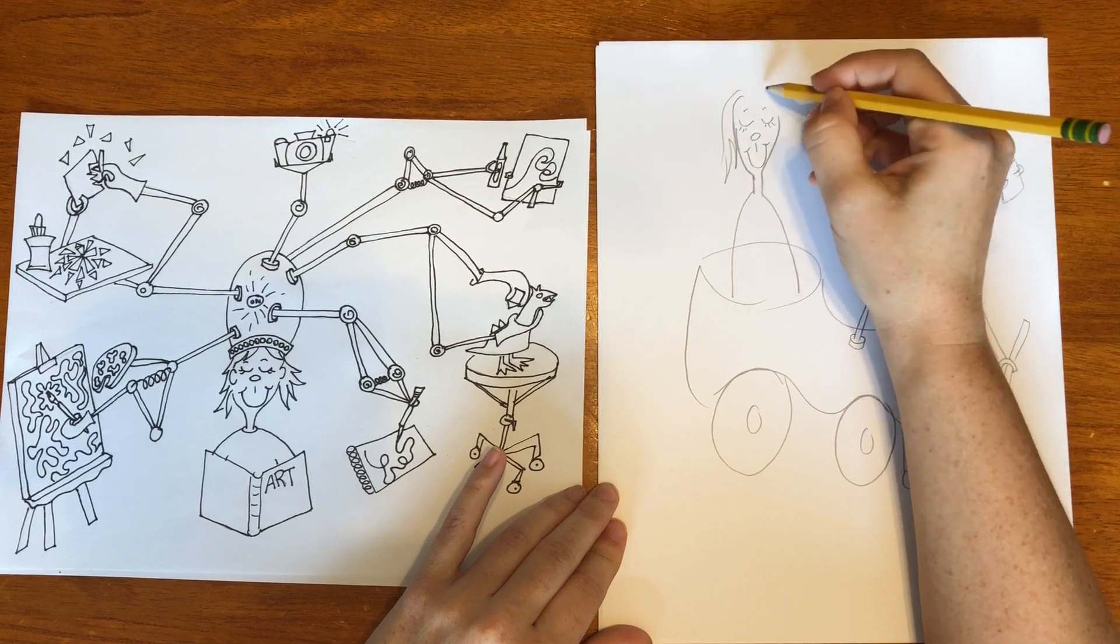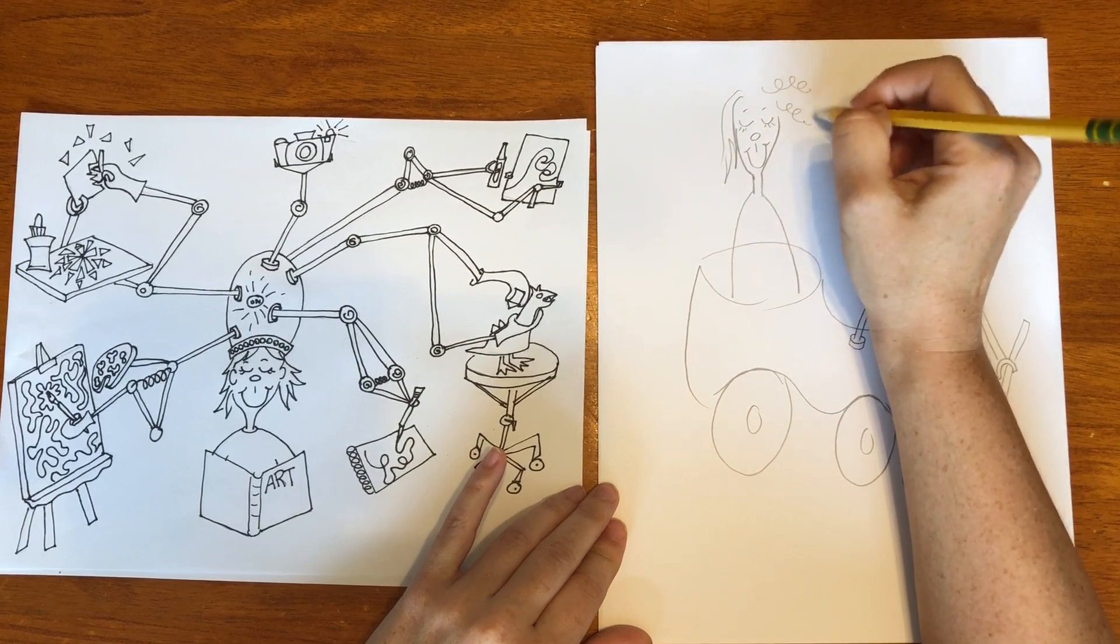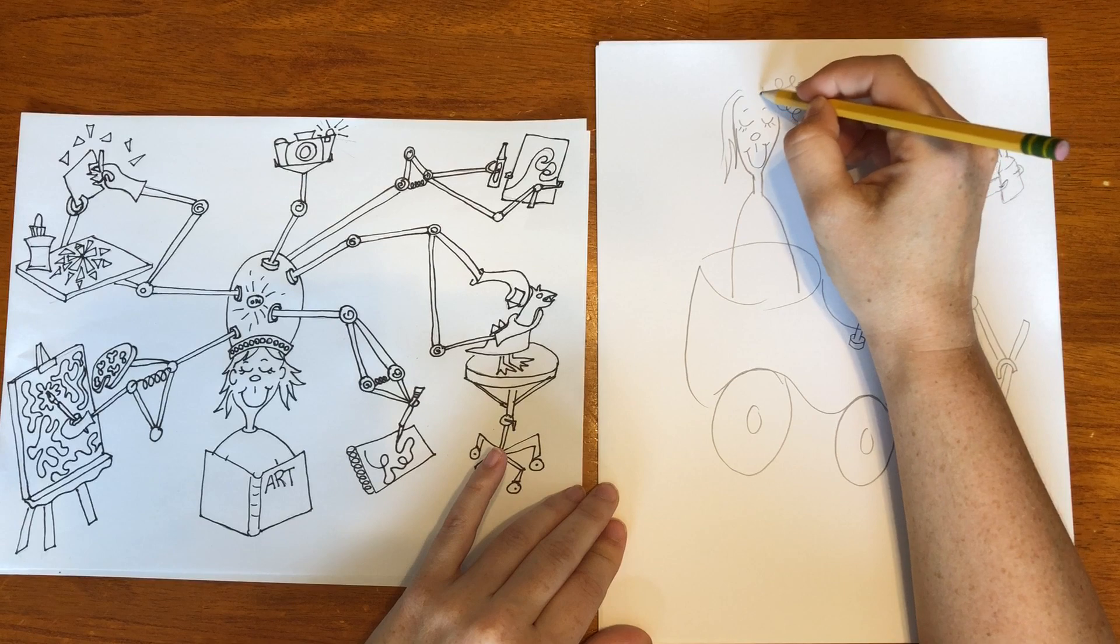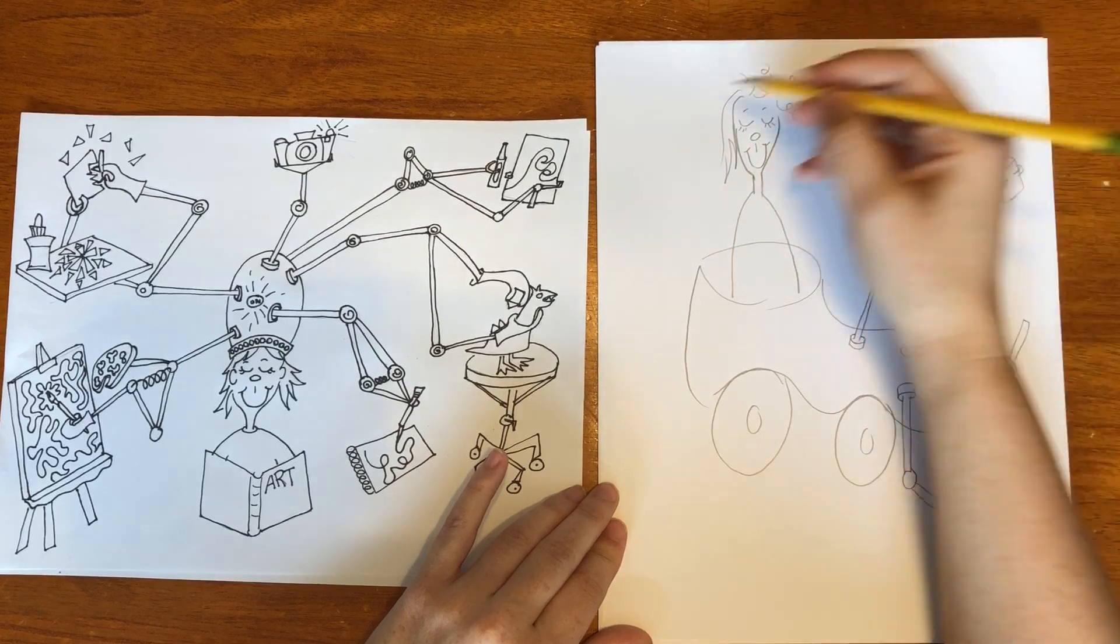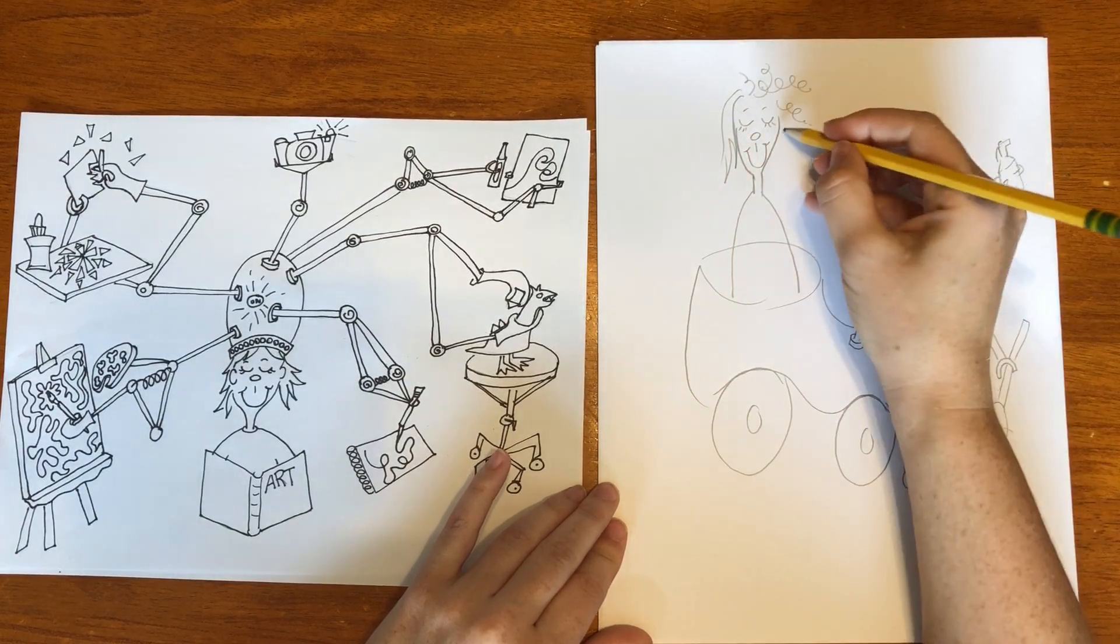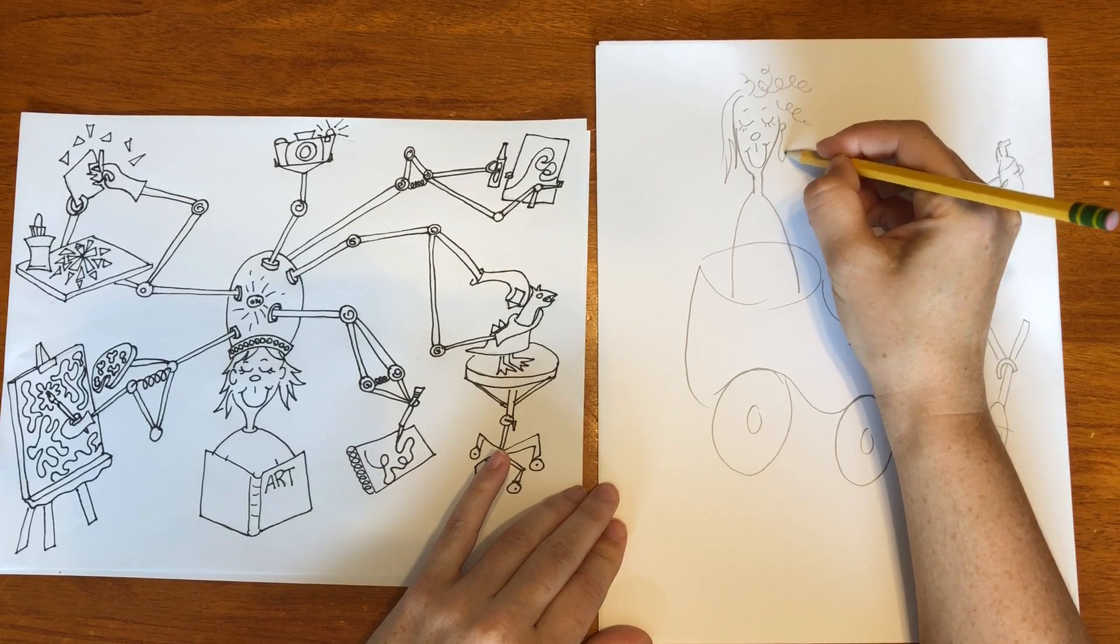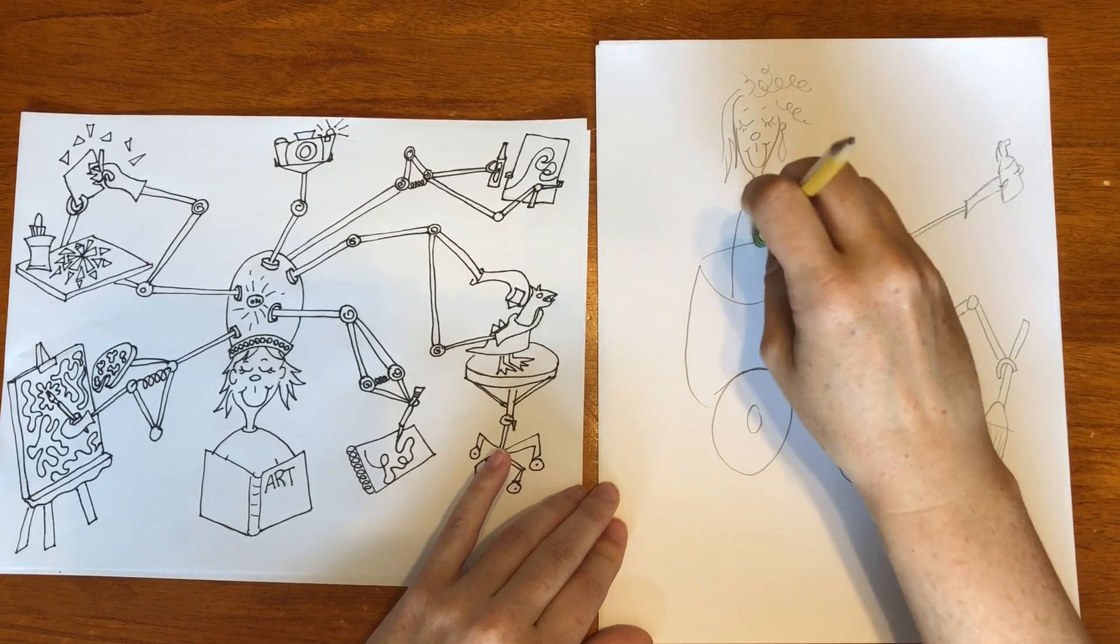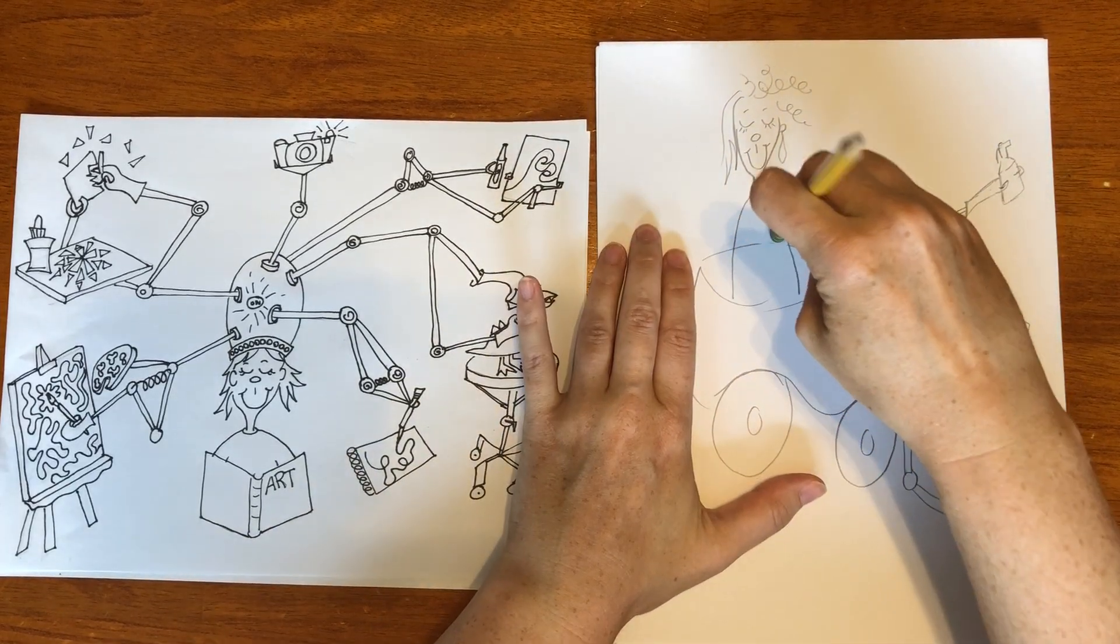And you can make whatever hair you want. You can make curly hair. You can make straight hair. You can make short hair. You can put a hat on. Whatever you'd like. Put ears. Put earrings on.